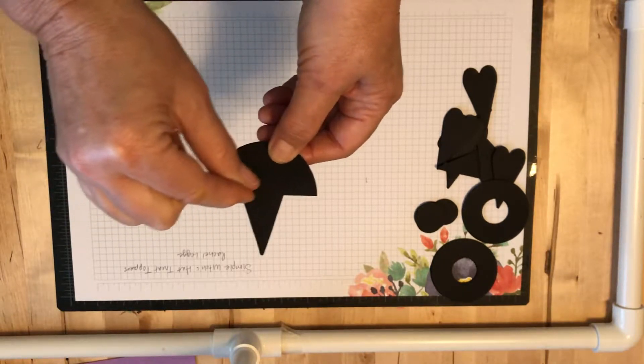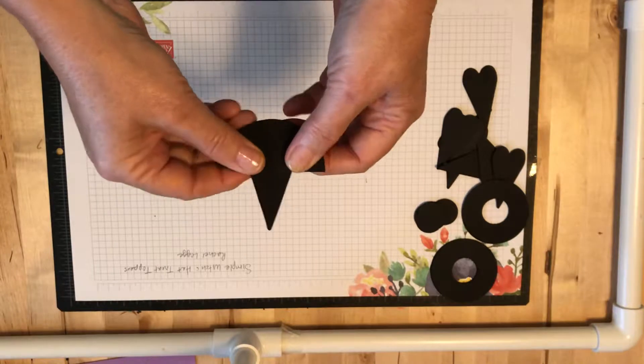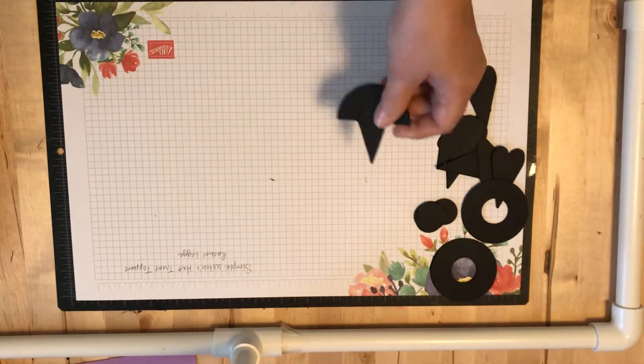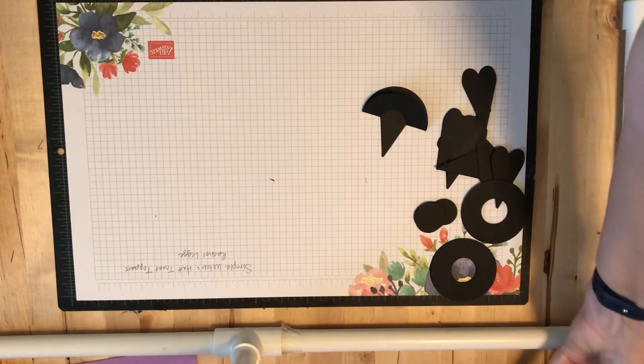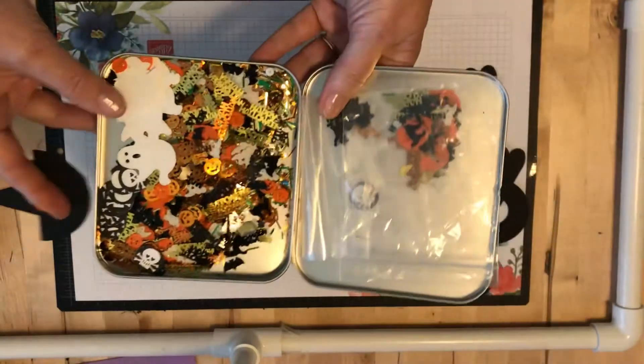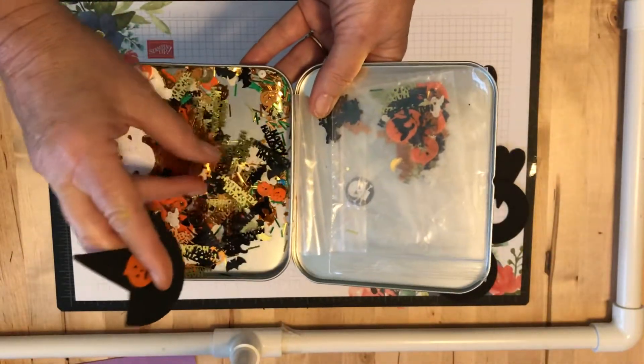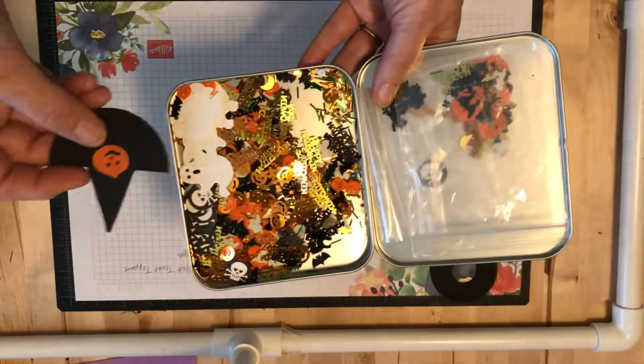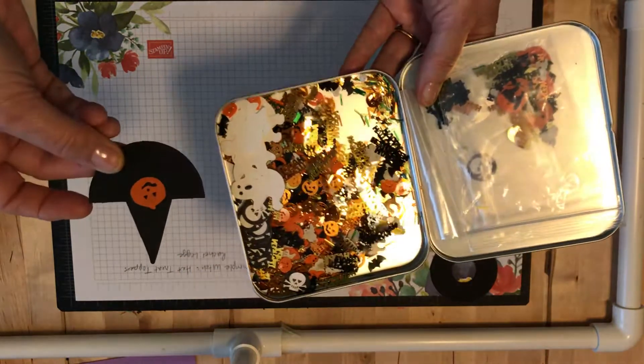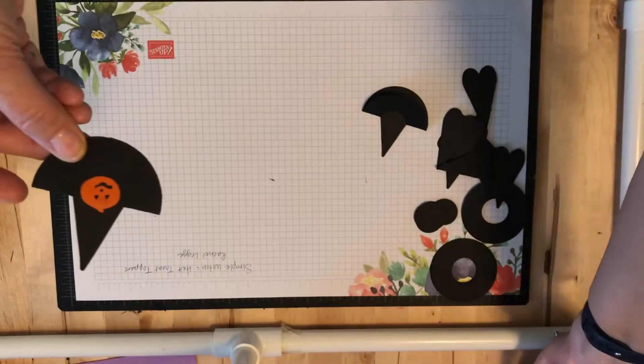She then put a little bow on hers but I don't have the bow punch, so I had some confetti. You know how sometimes when you get cards and it's got that little confetti that falls out of it. I had some of that left over and I took one of the little pumpkins out of it and put on some of my witch's hats.